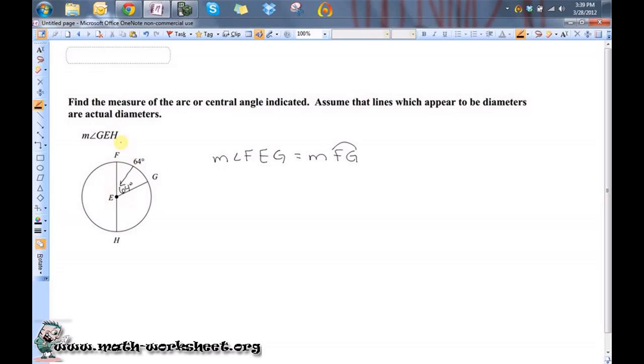Okay, well, because we're supposed to assume that if this looks like a diameter then it is, that means that this angle here along with this angle here should add to 180, because they're supplementary, because their non-common rays look like they form a line.